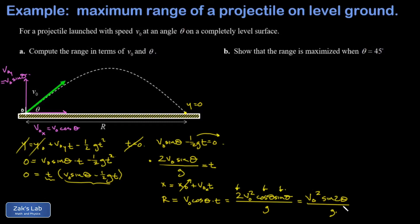If you shoot a projectile off a cliff or up to the top of a hill, the range will not be given by this formula. So this is a special case, but it's still interesting because it's pretty simple to find the angle that maximizes the range.